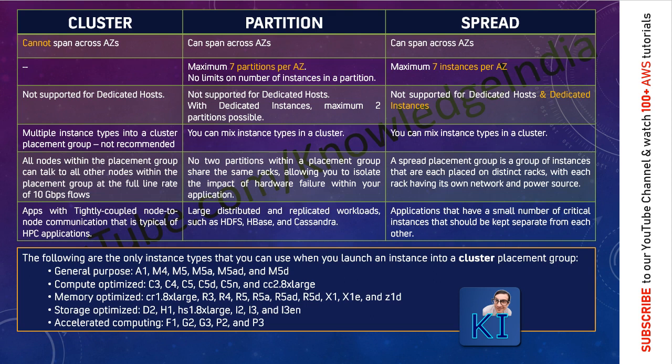To see which instance type has enhanced networking available, look at step number 2 while you are launching the EC2 instance. On the right-hand side, there is a column which says whether it has enhanced networking or not. With enhanced networking available, the speed of network traffic on the instance would be really high. That is the cluster one.